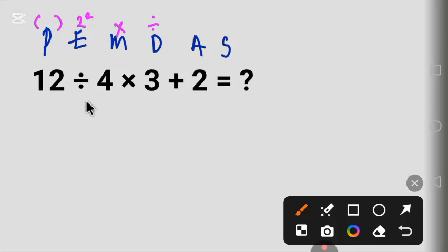12 divided by 4 gives us 3 times 3 plus 2. 3 times 3 gives us 9 plus 2.